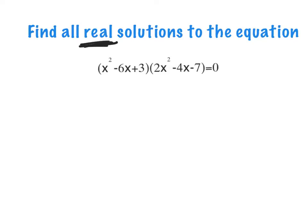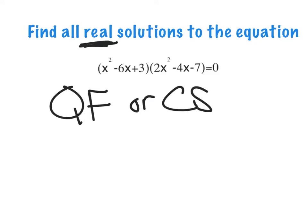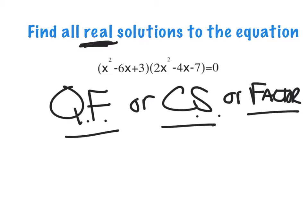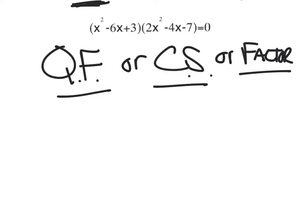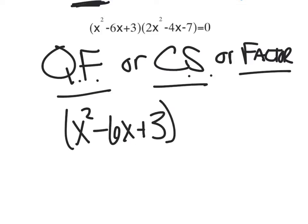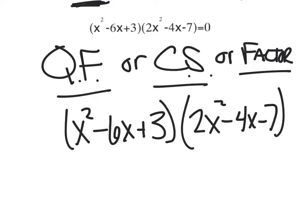What's another way we could solve these equations if we can't factor? We can use the quadratic formula, complete the square, or factor — three different methods. We don't really care which one you choose; do whatever you're comfortable with. If you love the quadratic formula, go for it. If you love completing the square, go for it. The only thing you can't do every time is factor, because not everything is factorable.